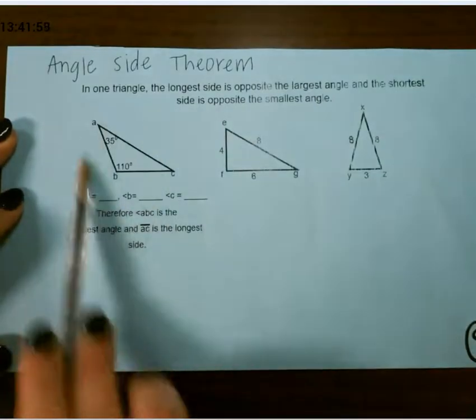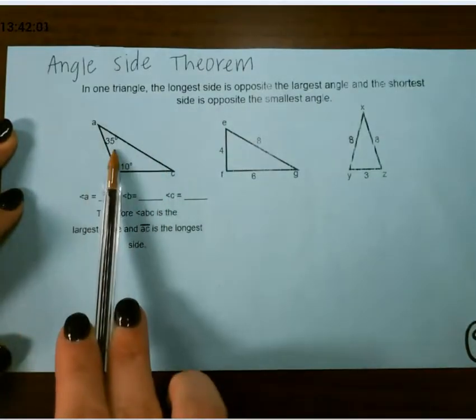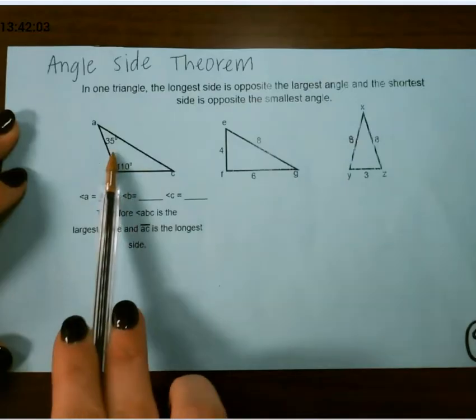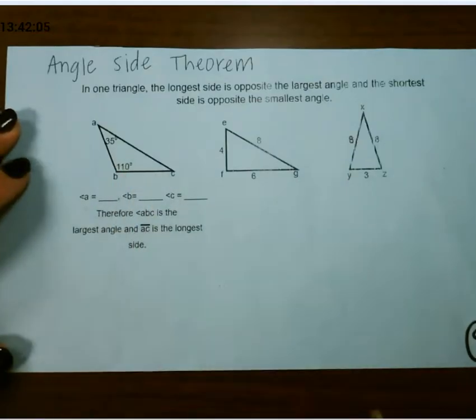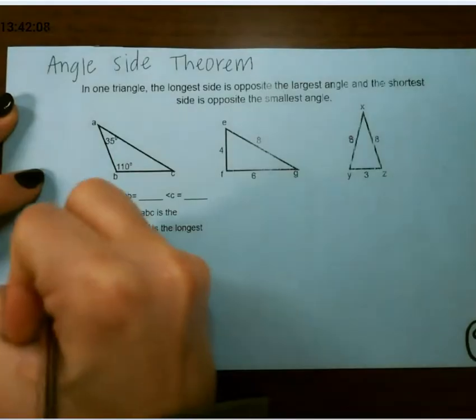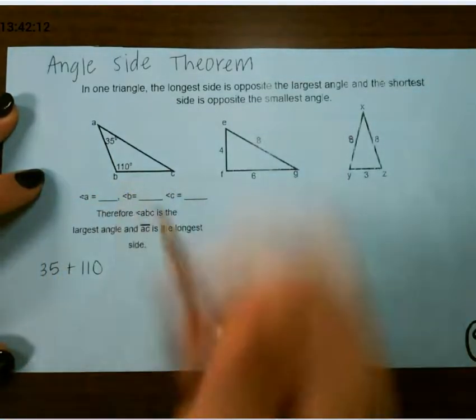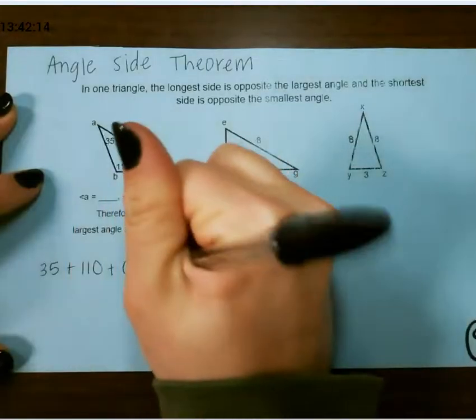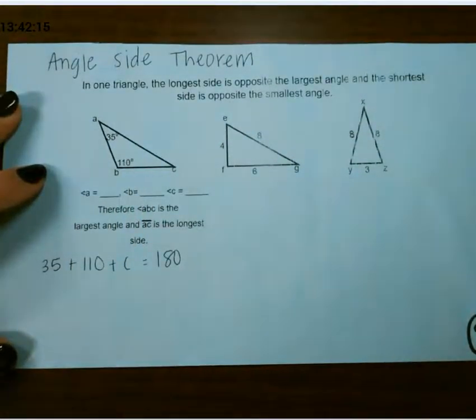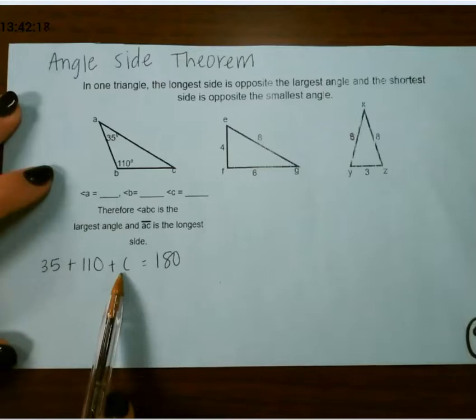For example, on this first one, we're looking at angle measures. Remember that the three angles of a triangle add up to 180. So 35 plus 110, plus whatever this measure is, is 180. Then we must solve to see what our missing angle is.